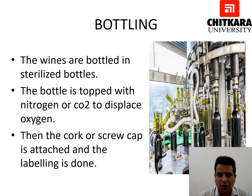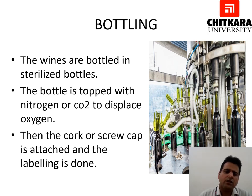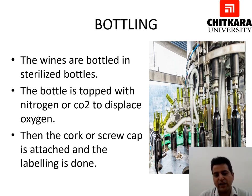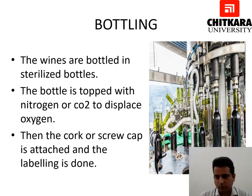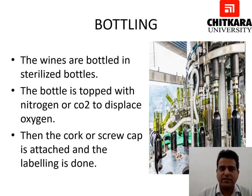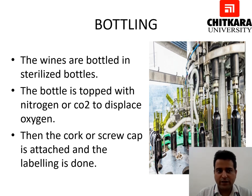The last step in the process of red wine production is bottling. The bottling is done in sterilized bottles. The bottle is topped with nitrogen or CO2 to displace oxygen, then the cork or screw cap is attached and the labeling is done. In earlier times all these steps were done by hand, but now with the coming of technology all steps are done with the help of machines, making the bottling process very elaborate, easier, and saving a lot of time.